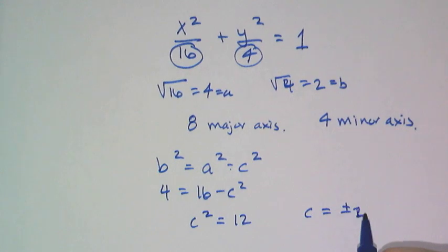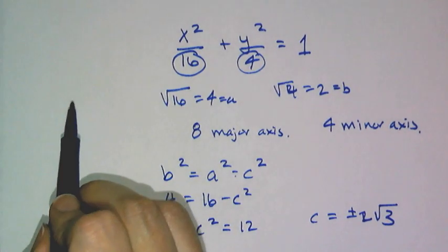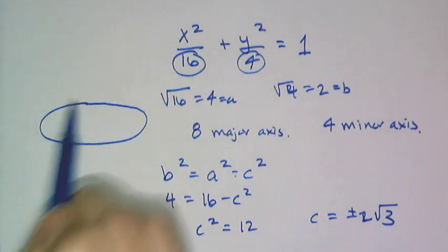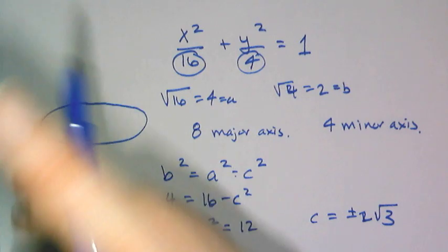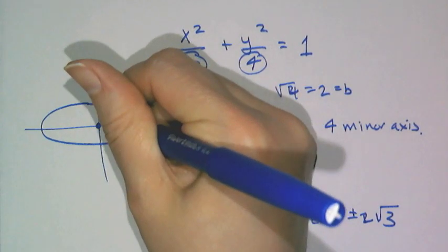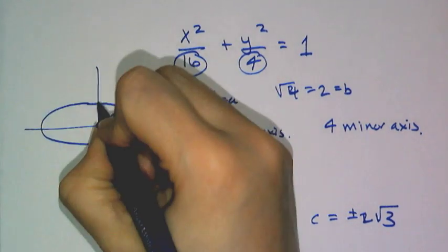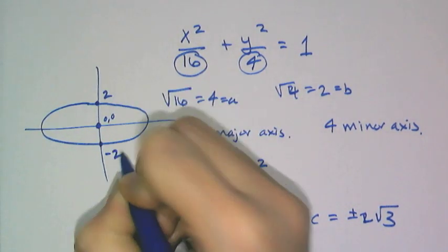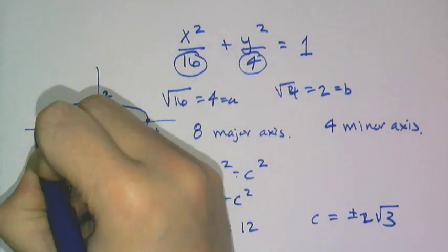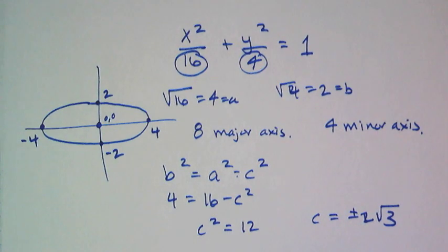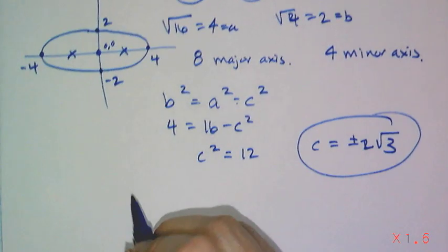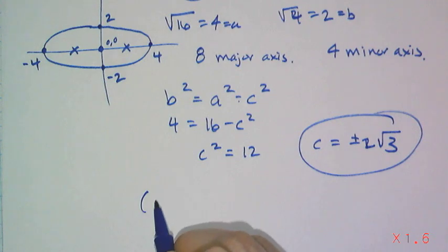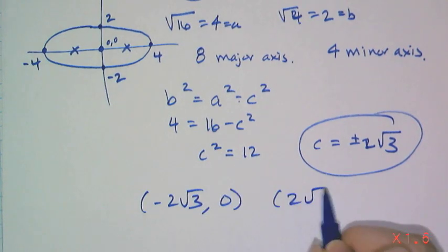So c squared equals 12, or c equals plus or minus 2 root 3. This means I have an ellipse oriented horizontally, because the larger number is under the x, so the foci are oriented horizontally. The center is at 0, 0, and the foci coordinates are negative 2 root 3, 0 and 2 root 3, 0.